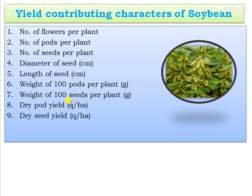The yield contributing characters of soybean include: number of flowers per plant, number of pods per plant, number of seeds per plant, diameter of the seed in centimetres, length of seed in centimetres, weight of 100 pods per plant, weight of 100 seeds per plant in grams, dry pod yield in quintals per hectare, and dry seed yield in quintals. These are the major characters that contribute to the yield of soybean.